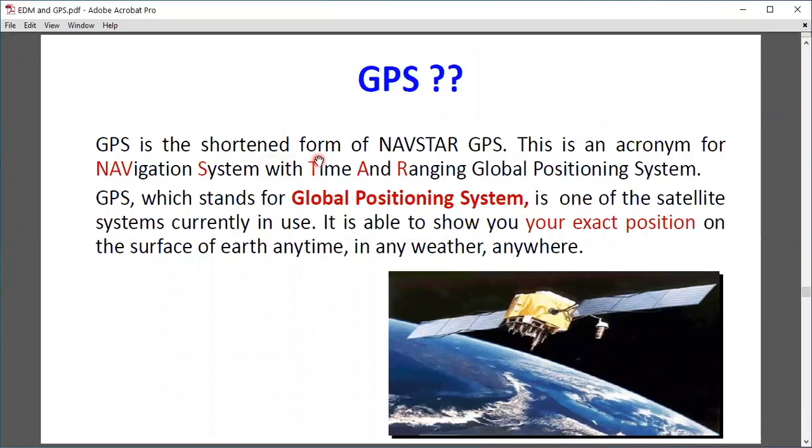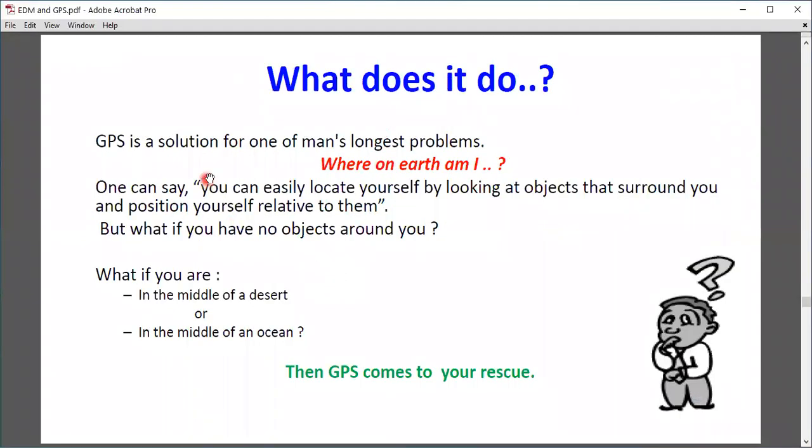GPS is the short form of NAVSTAR GPS. This is an acronym for Navigation System with Time and Ranging Global Positioning System. GPS stands for Global Positioning System and is one of the satellite systems currently in use. It is able to show you your exact position on the surface of Earth anytime, anywhere, in any weather.